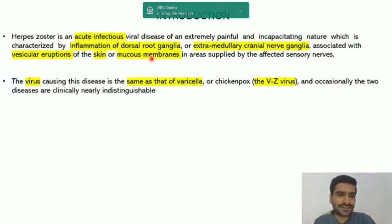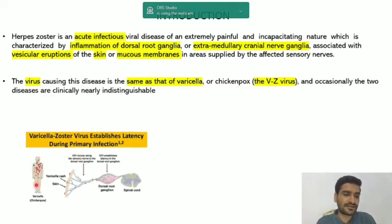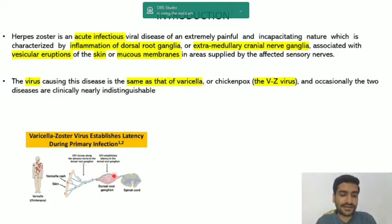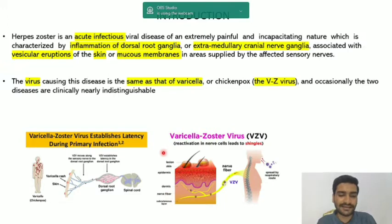The causative virus for herpes zoster is varicella zoster virus. Primarily, when varicella zoster attacks, it causes chickenpox - the primary infection in children with vesicular eruptions all over the body. After this primary infection is treated or cured, the virus stays in a latent or inactive state in the dorsal root ganglia. Whenever the virus gets triggered by any stimulus, it reactivates, leading to herpes zoster, also called shingles or zona.